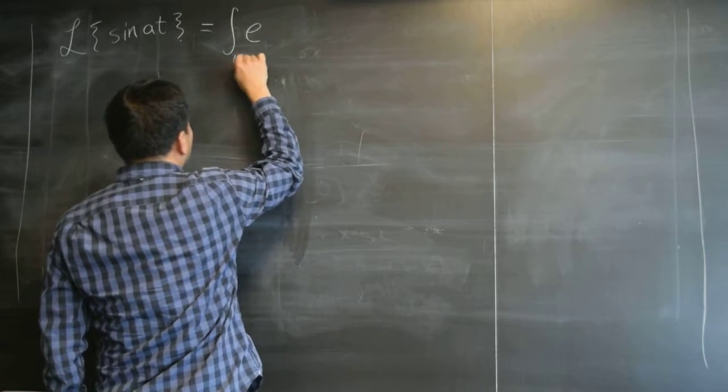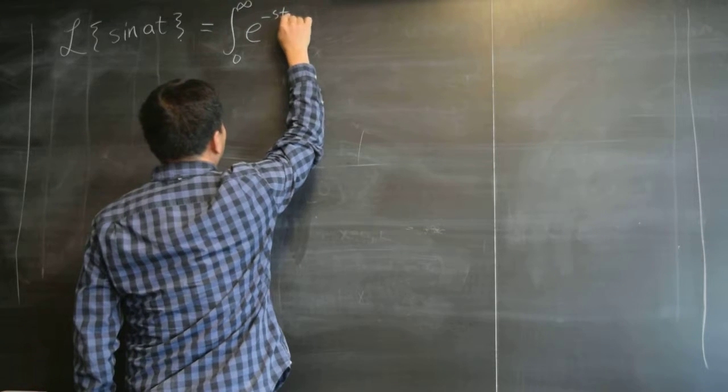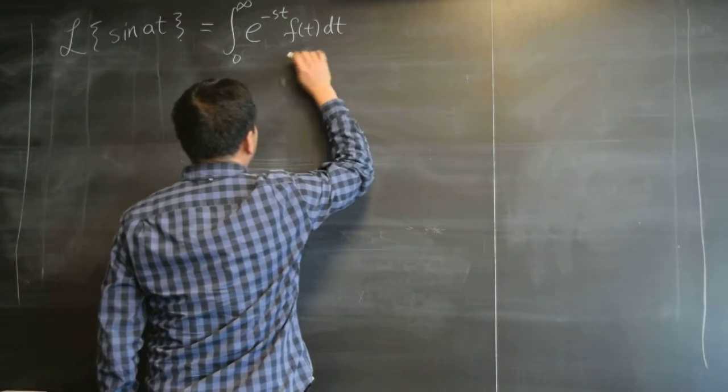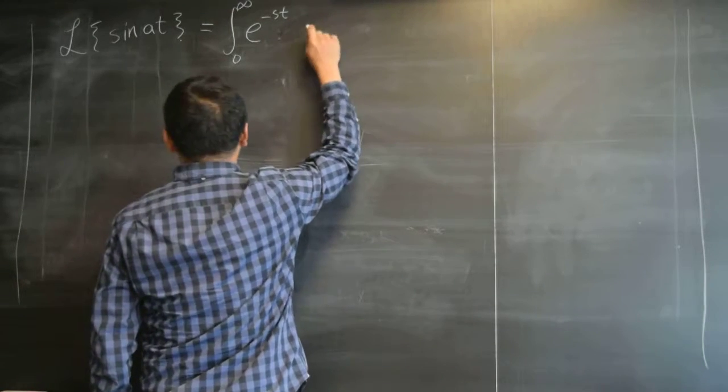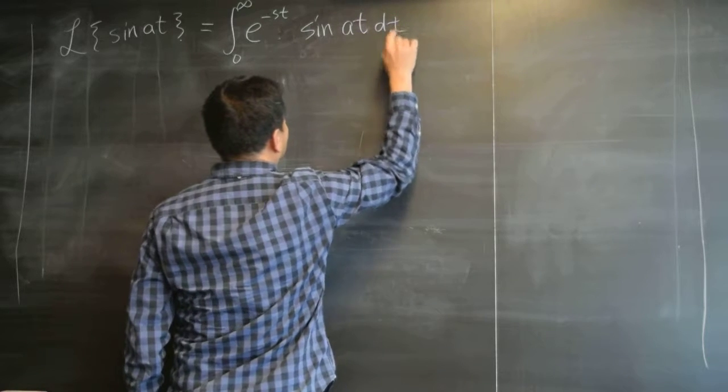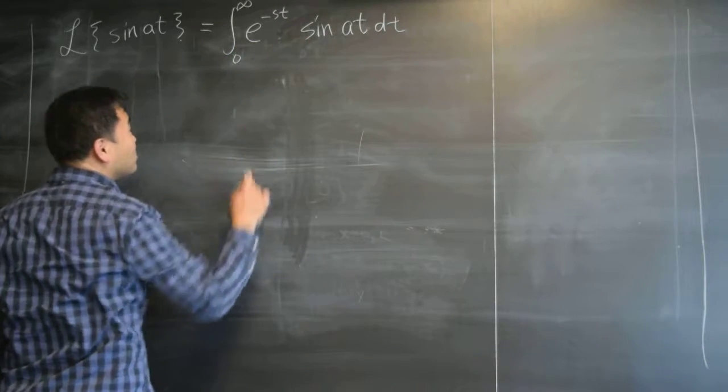So let's first write down the definition. It's 0 to infinity of e to the negative st times f of t dt, where this f of t now is sine of at dt. Now this requires, it's a product of two functions.